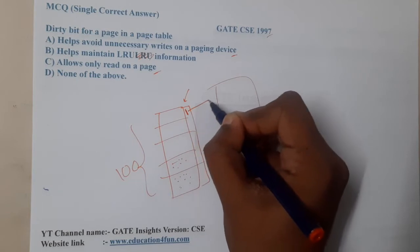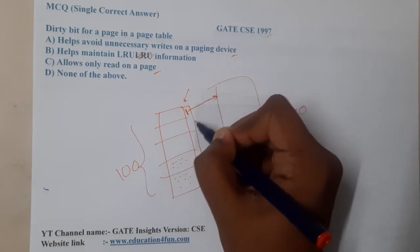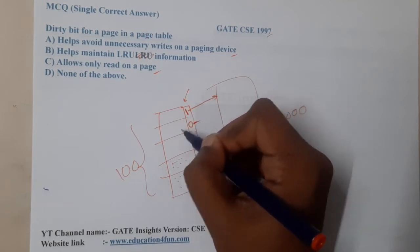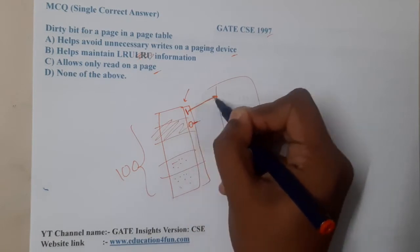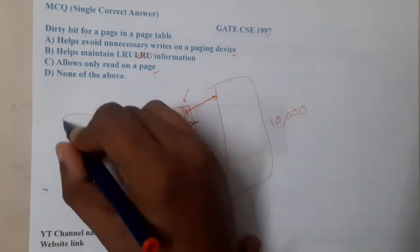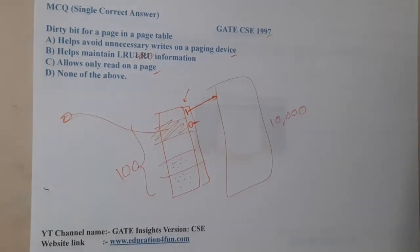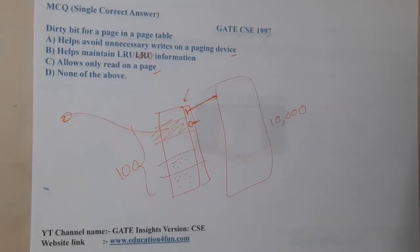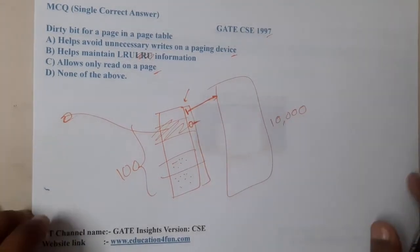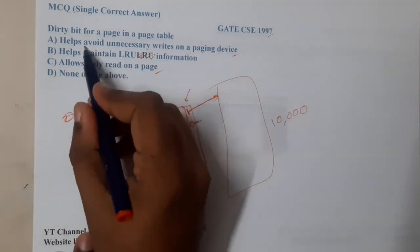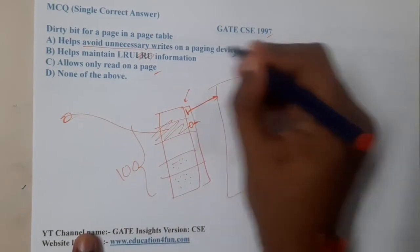When the bit is one, you are going to write that data. If it is zero, it means there is no update, so there is no need to perform the write operation — you can directly delete them. This reduces some time spent on writing the data, so we are trying to avoid unnecessary writes.